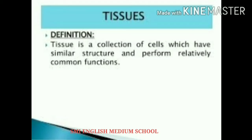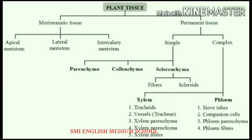Today we are going to learn about plant tissues. Plant tissues are of two types: meristematic tissues and permanent tissues. Meristematic tissues are again divided into apical meristem, lateral meristem, and intercalary meristem. Permanent tissues are divided into simple permanent tissues and complex permanent tissues.